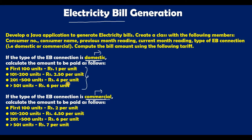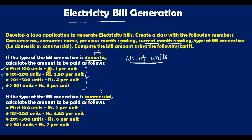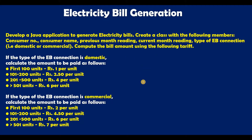For domestic, these are the formulas, which we are going to call slabs — slab 1, slab 2, and so on. The bill is generated based on the number of units, calculated by subtracting the previous month reading from the current month reading. For the first 100 units, the cost is Rs 1 per unit. From 101 to 200 units, it is Rs 2.50 per unit. From 201 to 500 units, it is Rs 4 per unit. Above 500 units, it is Rs 6 per unit.